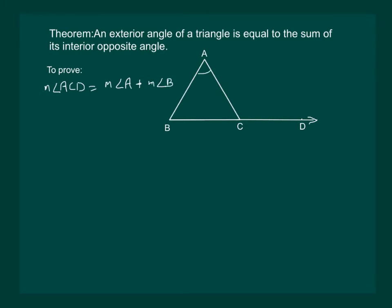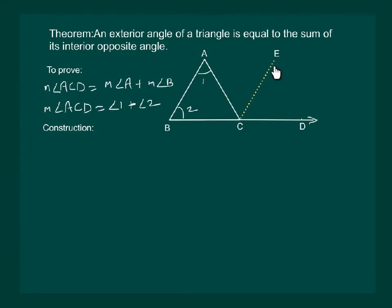Let us name angle A as 1 and angle B as 2, so we have to prove that angle ACD is equal to angle 1 plus angle 2. For the proof, let us construct CE parallel to BA. Let us mark angle ACE as X and angle ECD as Y.